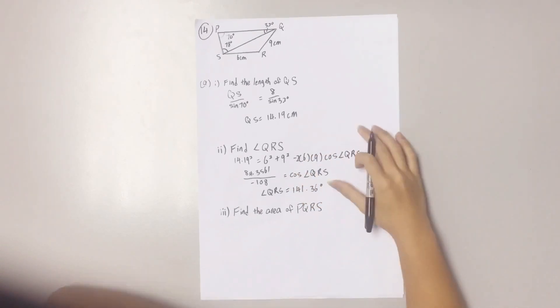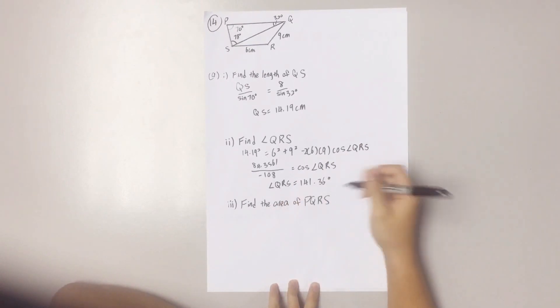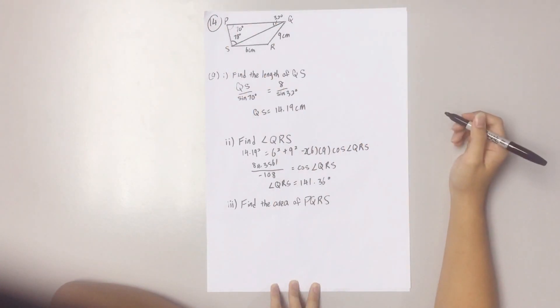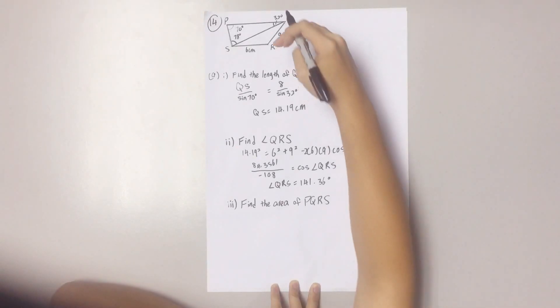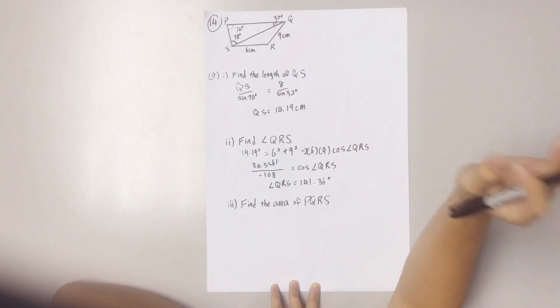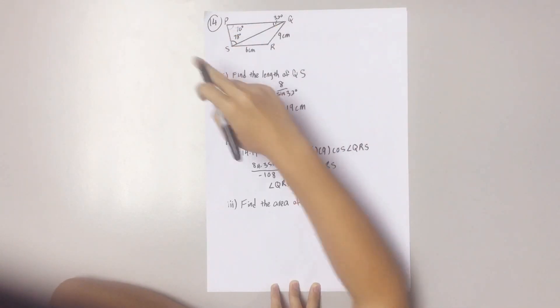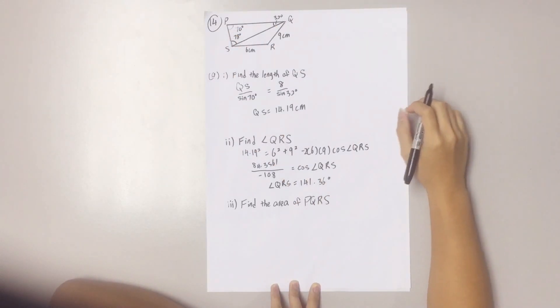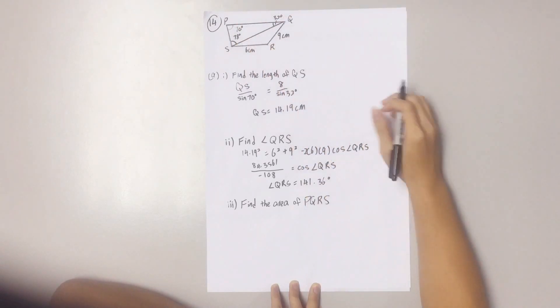Now let's go to Question 3. Find the area of PQRS. To find the area, you must use the method you use to find the area of a triangle. As you can see from the diagram, there are two triangles. So, just find the area of both triangles and add them together.